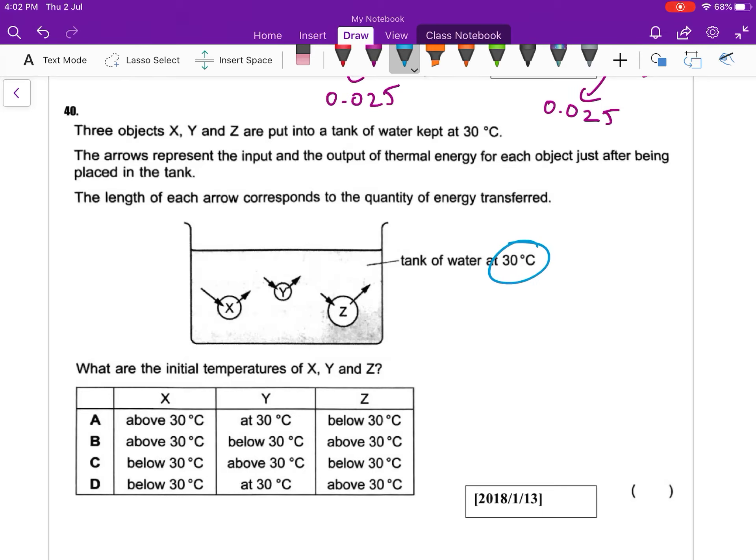The length of each arrow corresponds to the quantity of energy transferred. So what are the initial temperatures of X, Y, and Z?